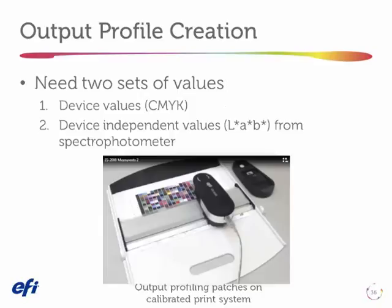The first thing to understand about creating this profile is that I need two sets of values. A profile always has one set of device values and one set of device-independent values. For an output profile, the device values are going to be CMYK. I get these from a standard chart — this is an IT8 73 and 928 patch target that I can use to create a profile. I know what the CMYK values are for every one of those patches on this chart.